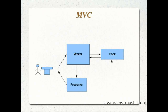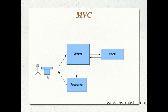Once the order goes to the cook, the cook doesn't worry about where the order came from or how to take orders — all the cook does is cook the dish. Once the dish is ready, the food is passed back to the waiter, who passes it to the presenter. There could be different presenters depending on the type of dish, but the waiter knows which presenter is right for the current order. The presenter does not worry about how to take orders or cook — they only focus on presenting it properly. Once presentation is done, the food is passed on to the customer.